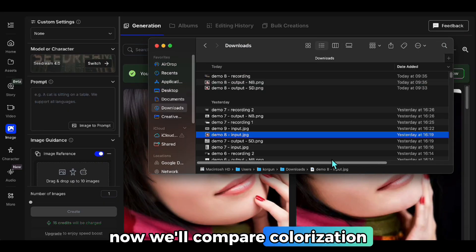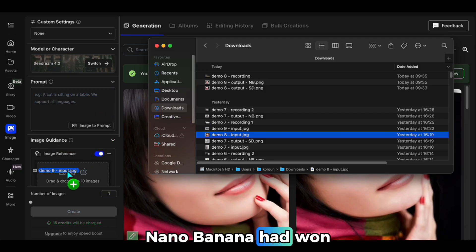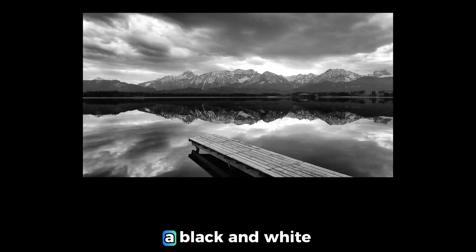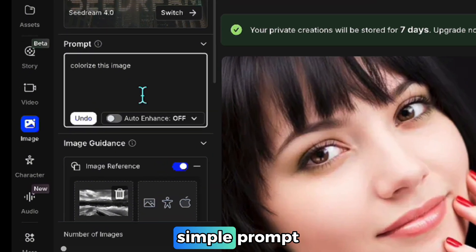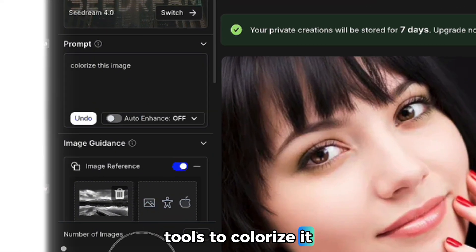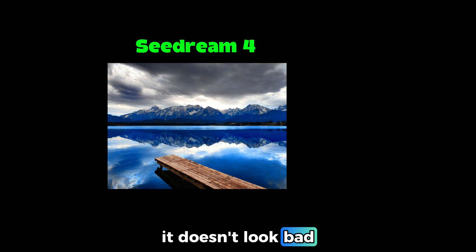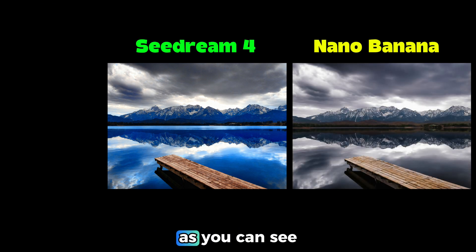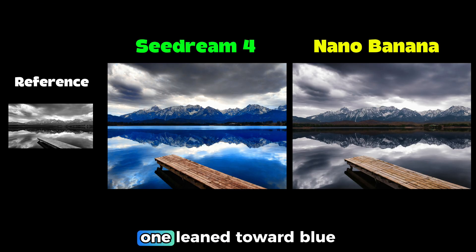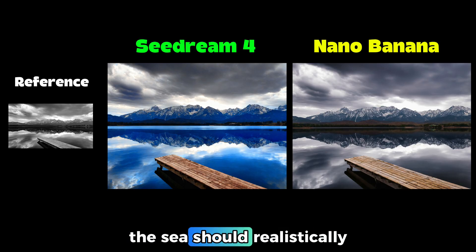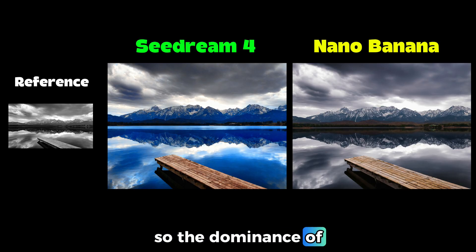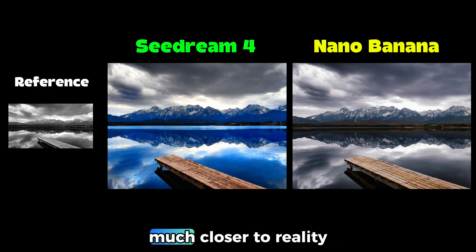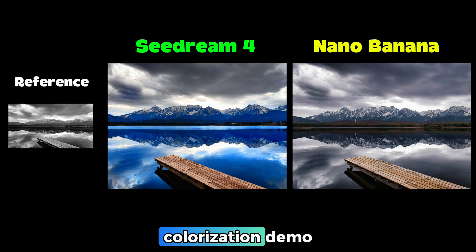Now we'll compare colorization. I'm using a black and white photo, and with a very simple prompt I'll ask both tools to colorize it. Here's the result from Seedream — it doesn't look bad. And here's the one from Nano Banana. They colorized it very differently: one leaned toward blue tones, the other toward gray tones. But when you look at the clouds, the sea should realistically appear a bit darker, so the dominance of gray tones is more likely. Even though both look nice, Nano Banana's result feels much closer to reality, and just like in the upscale test, Nano Banana comes out on top in this colorization demo as well.